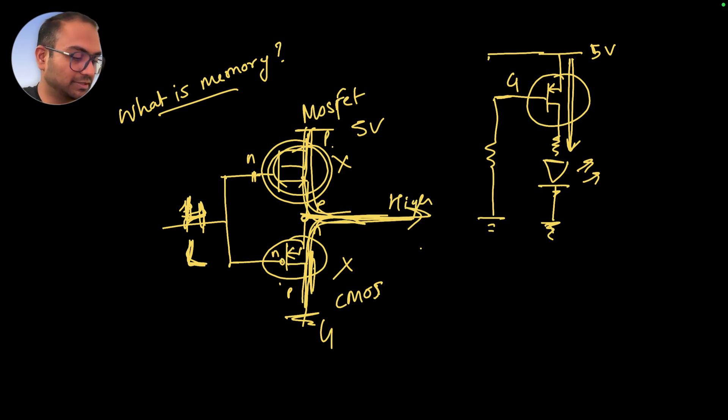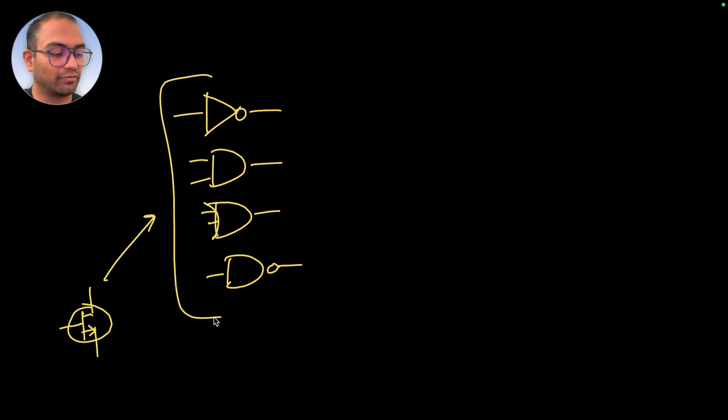The interesting thing is using such bistable - bistable means two states that can be stable - you can arrange these transistors in a clever way to create gates: logical AND gate, OR gate, NOT gate, the universal gates. So we started from a transistor and went to the idea of gates, and this is where the interesting stuff starts to happen.